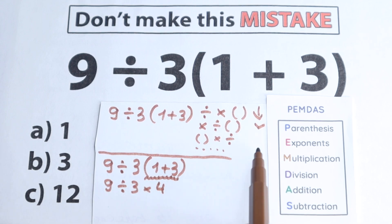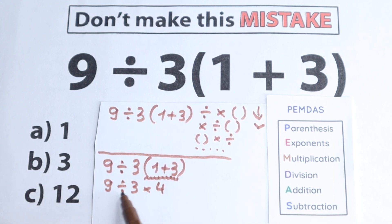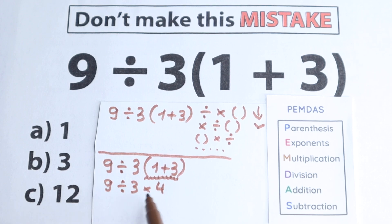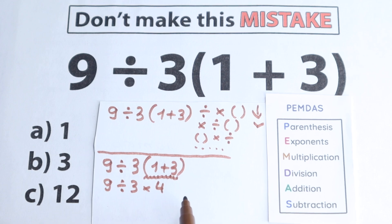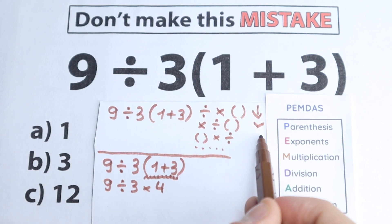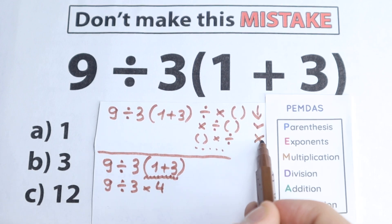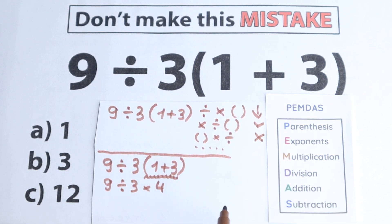The next step is exponents. Let's look at whether we have any squares or cubes here. No, I don't see any. We don't have any exponents, so we just skip this part.